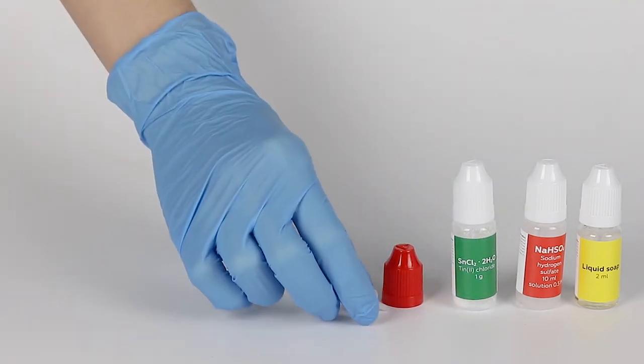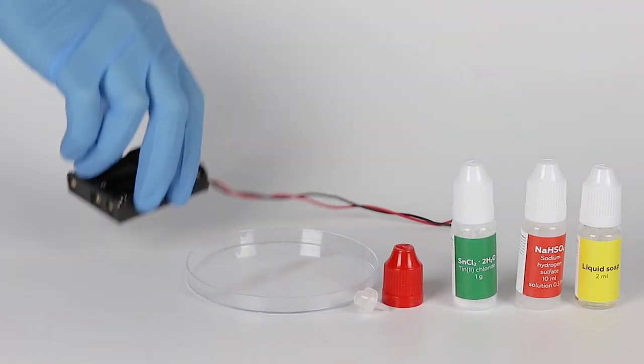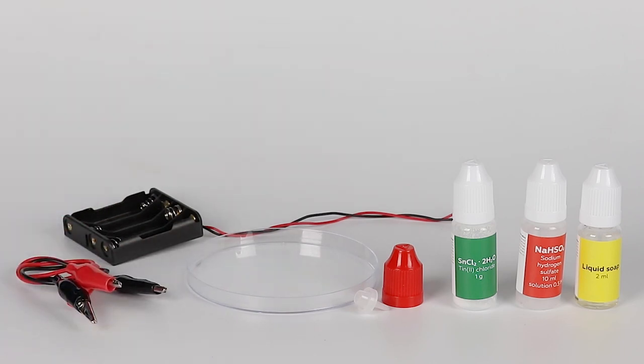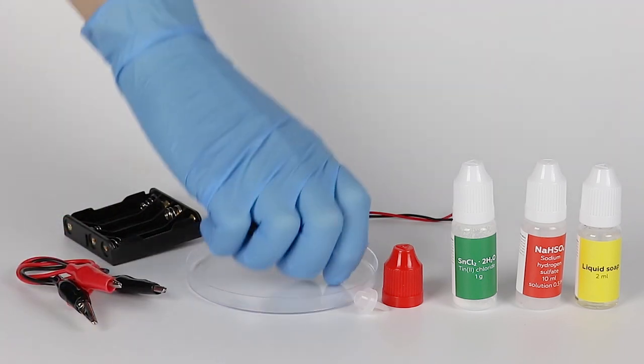For the tin dendrite experiment, you will need liquid soap, sodium hydrogen sulfate solution, tin chloride, a red cap, a tip, a petri dish, a battery holder, and crocodile clip wires. Prepare four AAA batteries in advance.